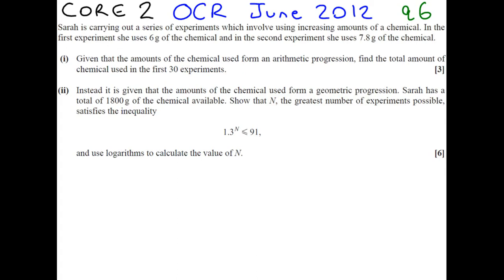Sarah is doing the experiment and what she's doing is using a chemical. All we care about in maths really is the numbers, the amounts. So first she uses 6 grams of the chemical and then she uses 7.8 grams of the chemical. And she carries on doing some experiments, but they're the only two values of how much chemicals she used that we know.